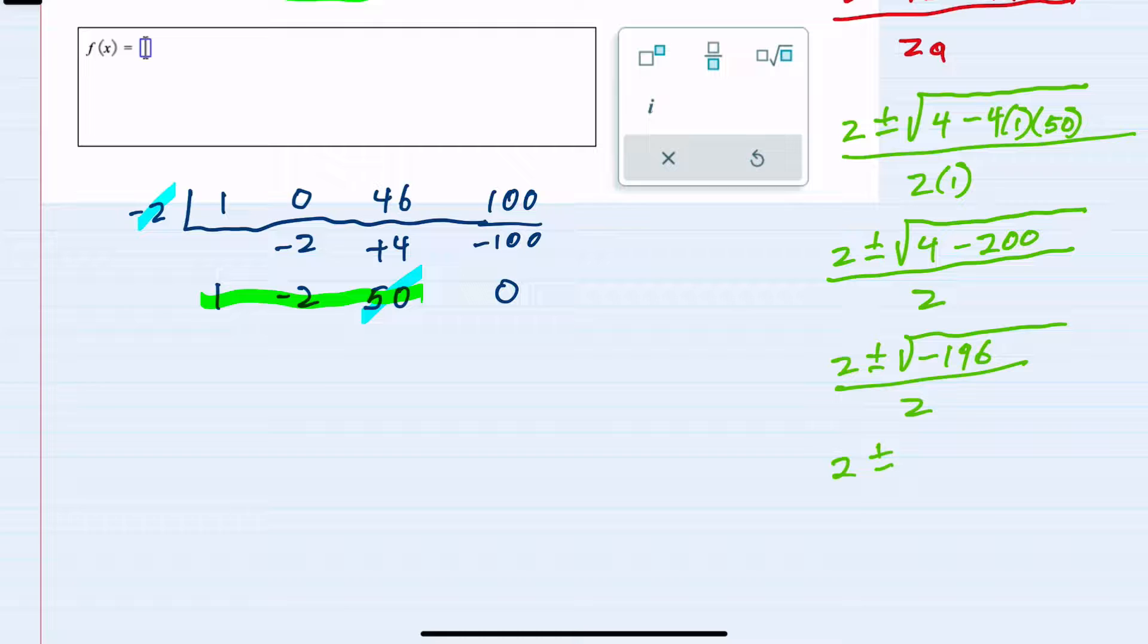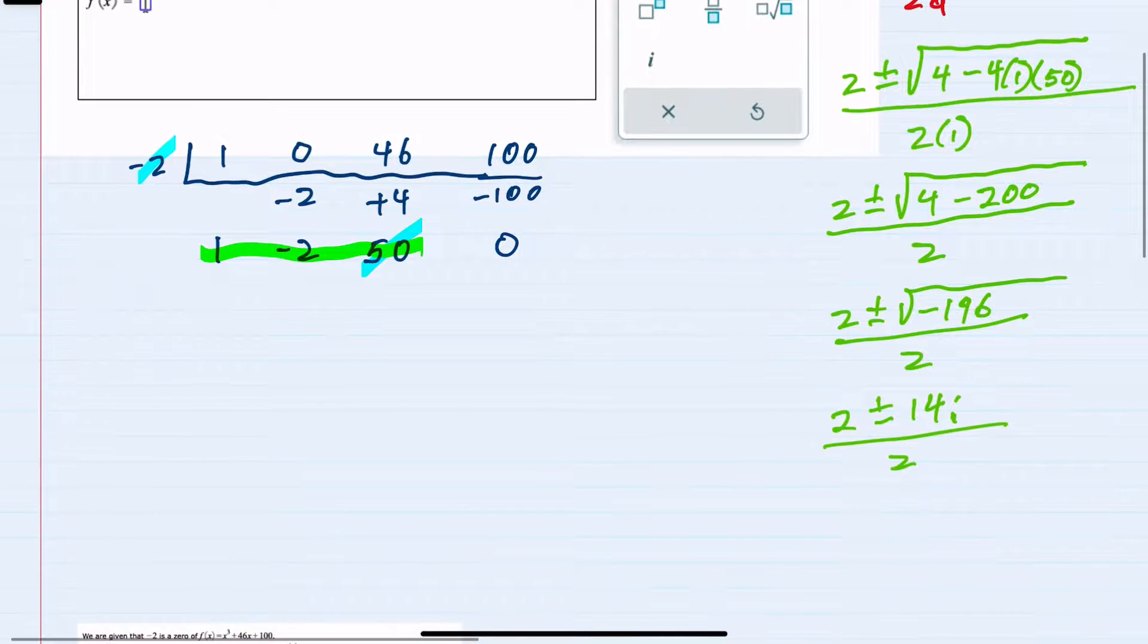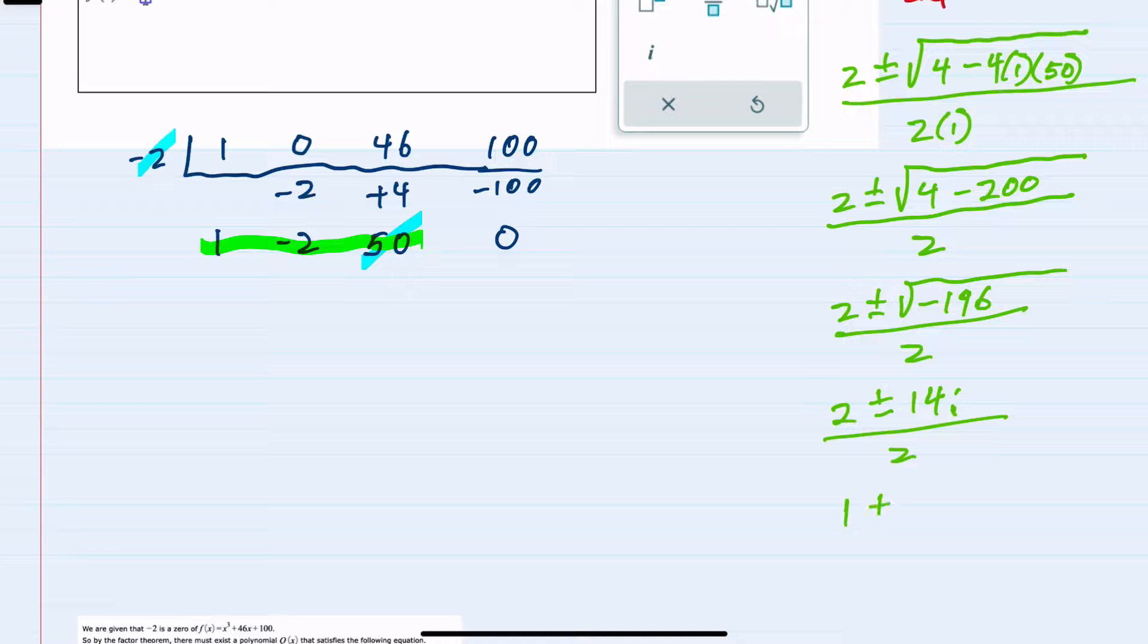The square root of 196 is 14. So I can simplify. The square root of 196 is 14. Since it's negative, that would come out as a negative 14i. i because it is a negative under the radical. And then lastly, I can separate these, dividing both the first part and the second part by 2. We would have 1 plus or minus 7i.